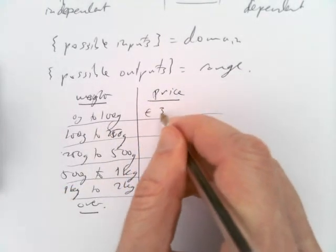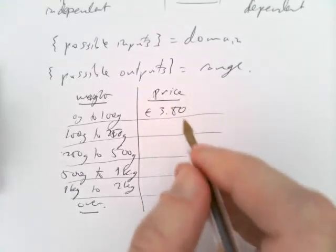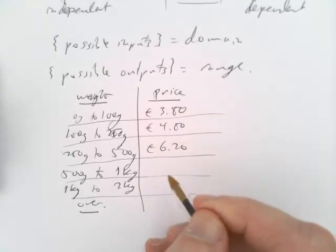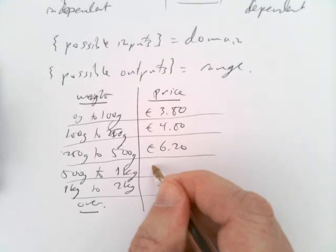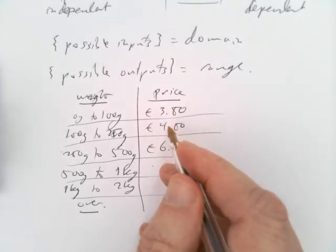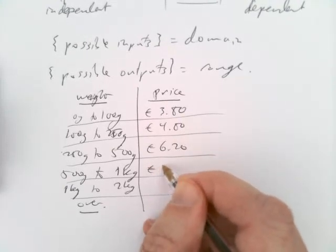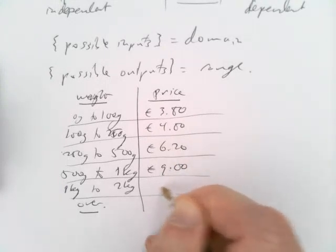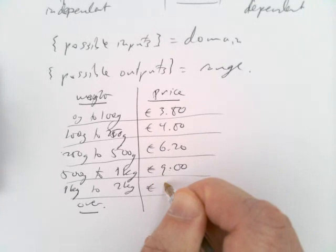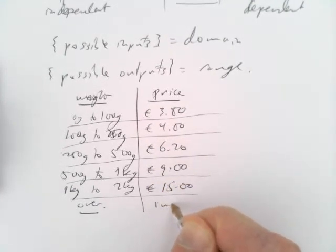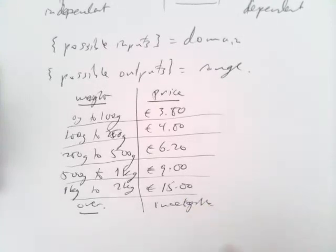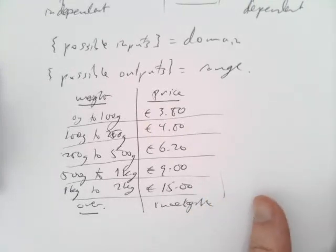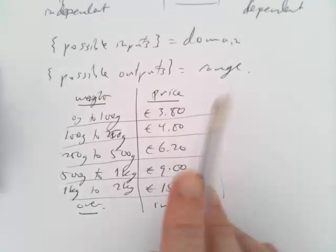So if it's in this range, you have to pay maybe 3 euros 80 cents. And in this range, 4 euros 80 cents. And in this range, 6 euros 20. And in this range, 9 euros. 1 to 2 kilos, let's make up a price: 15 euros. And then after that, it's ineligible. You're not allowed to send it because it's too heavy for this system. So something like this, there's the table. We could describe a function by a table with input values and output values, or a function described as some kind of formula.